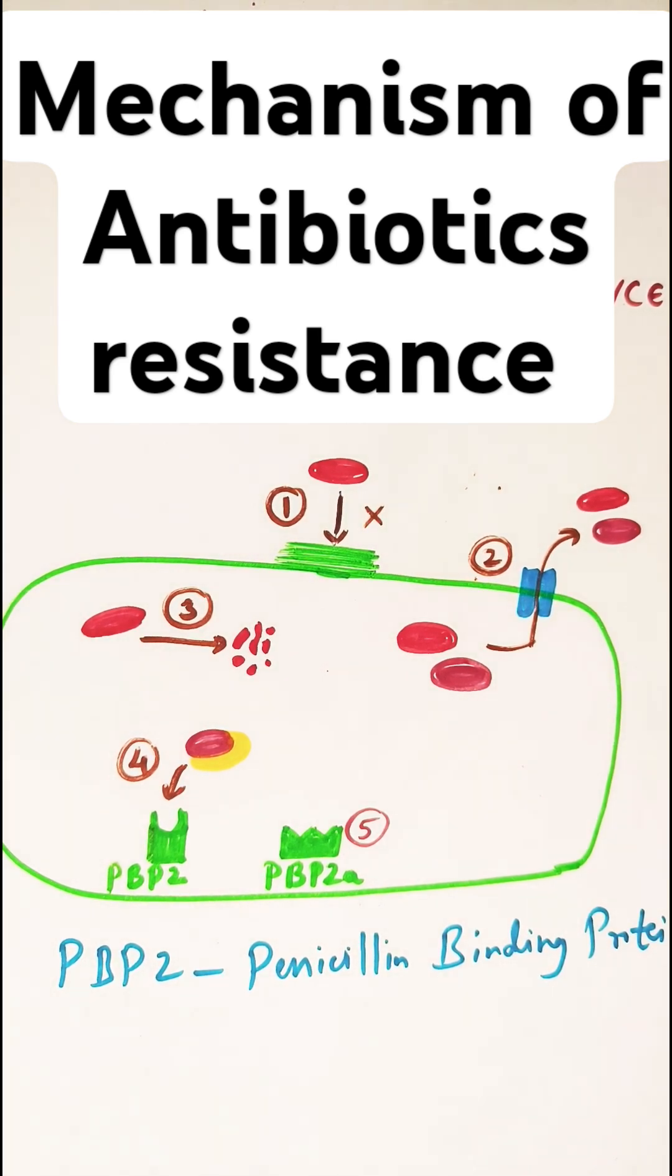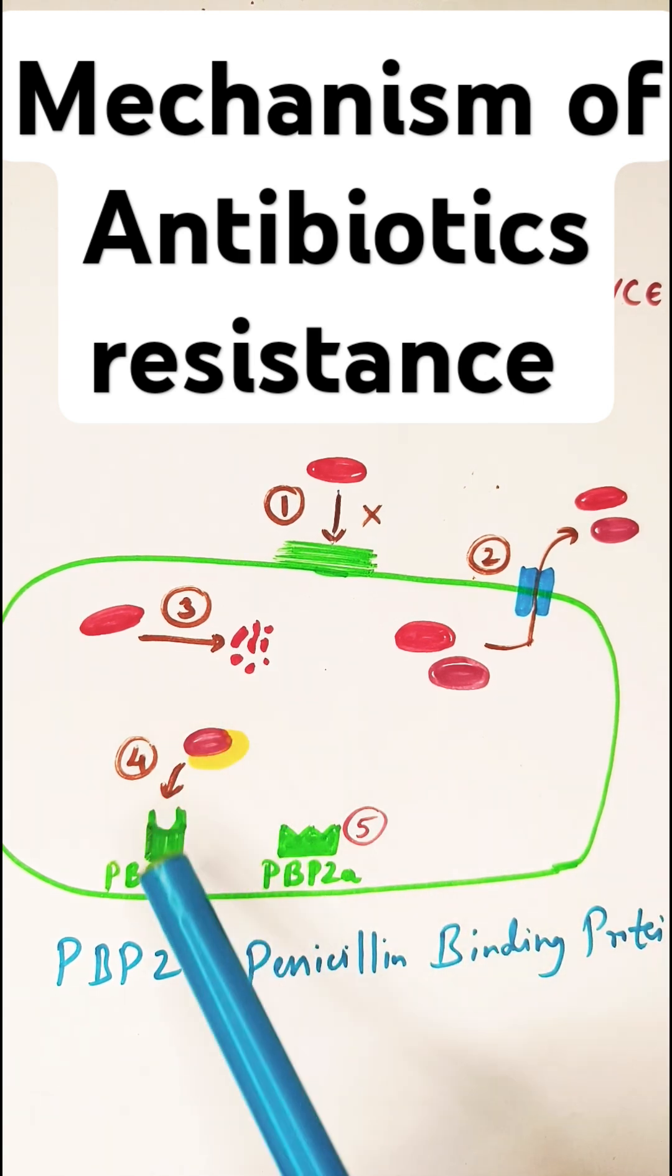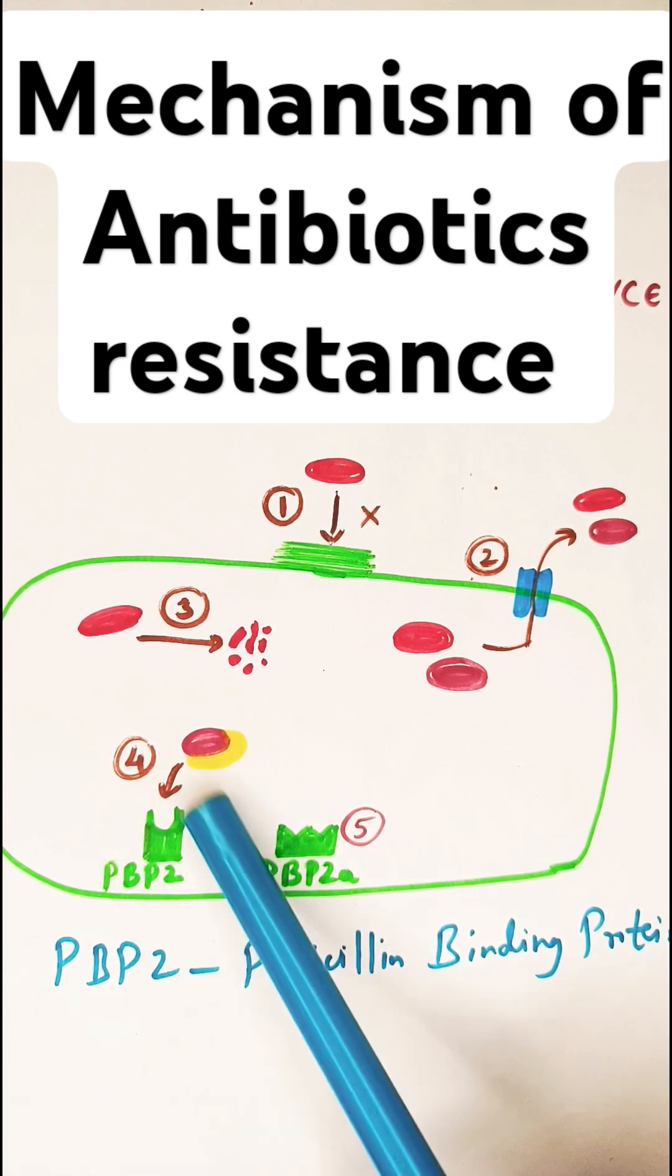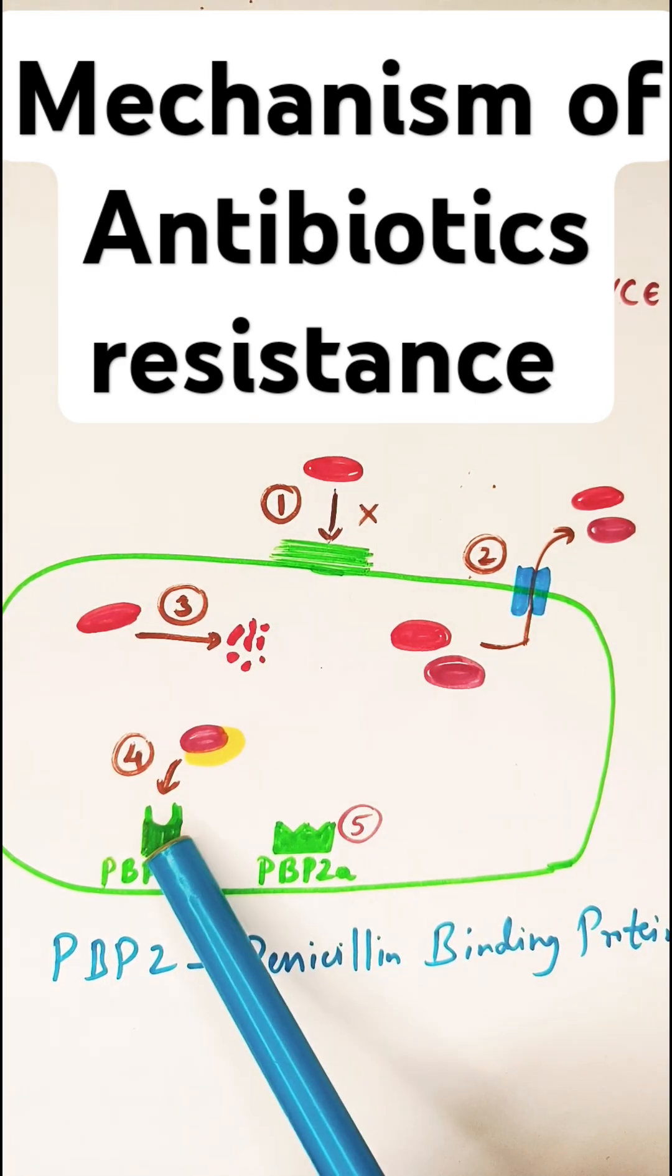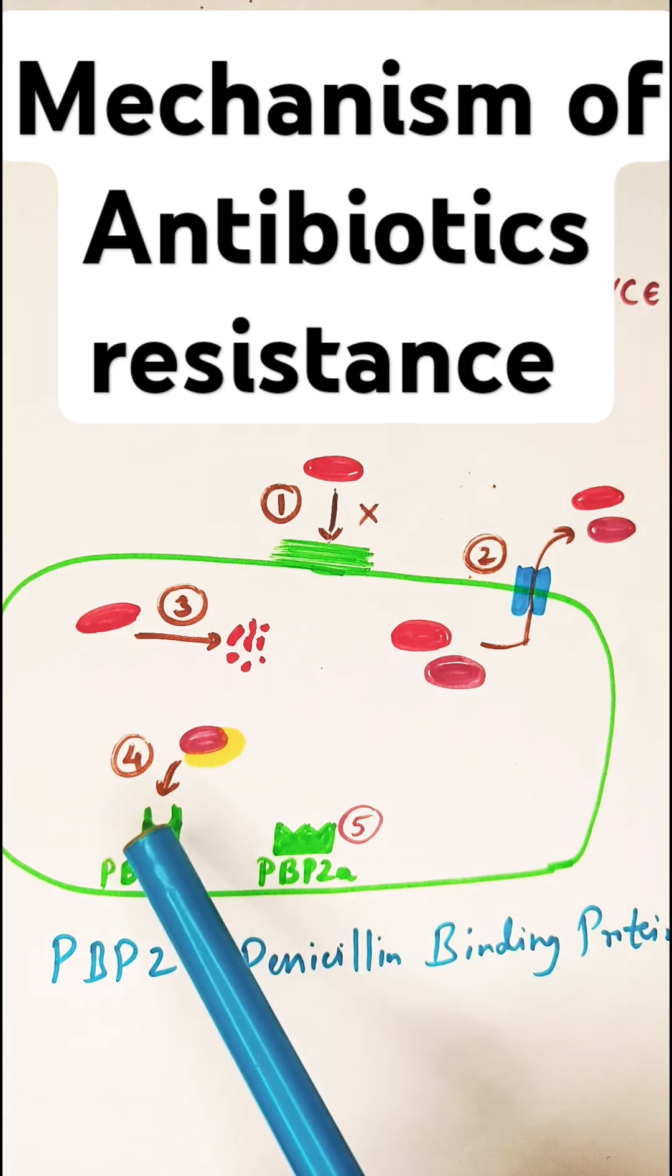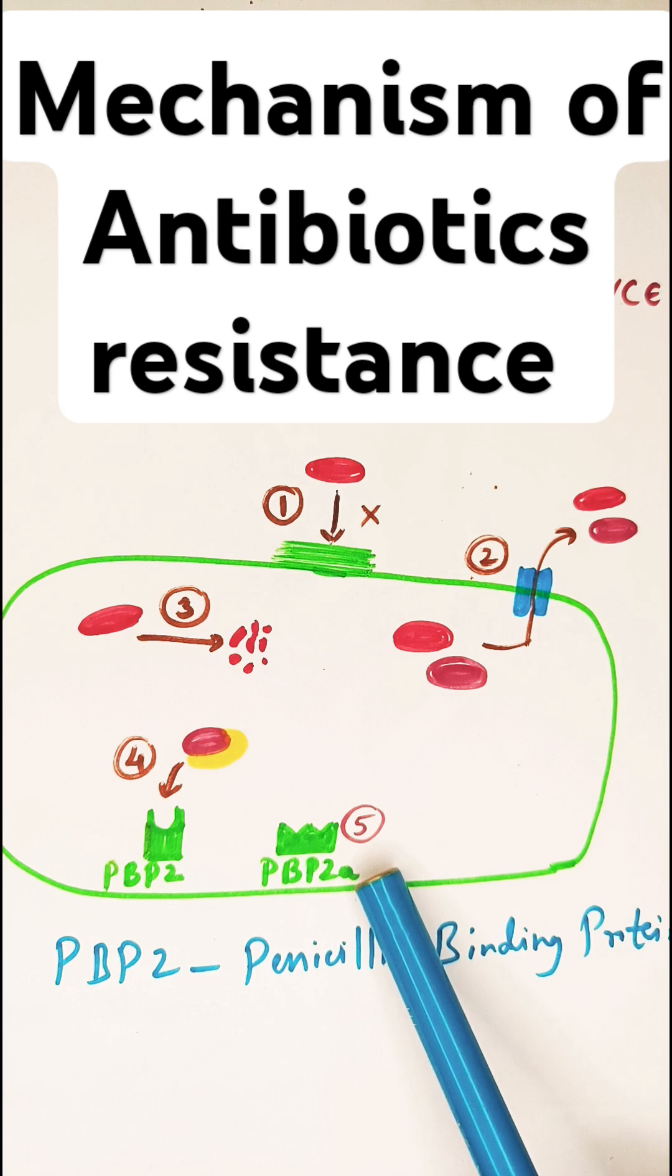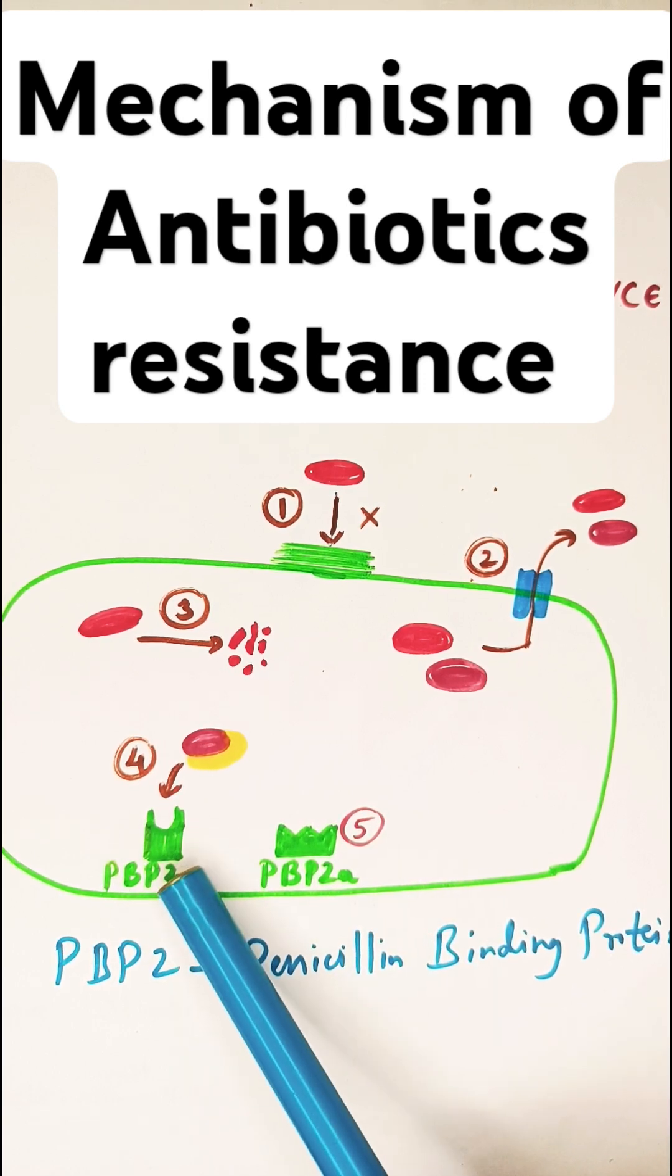In some bacteria, normally penicillin goes and binds to what is called PBP, penicillin binding protein. This is the target site, called PBP2. Now what has happened here is instead of PBP2, there is a new protein which is produced, an altered protein, which is why we call it PBP2a. Normally PBP2 was the one producing the cell wall.